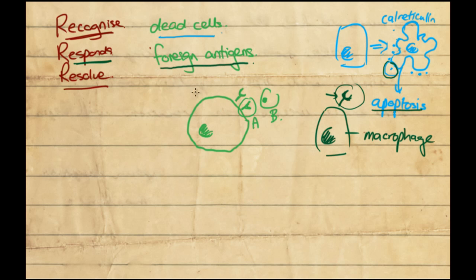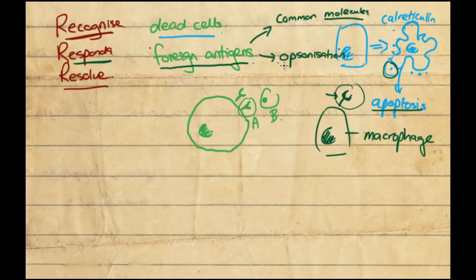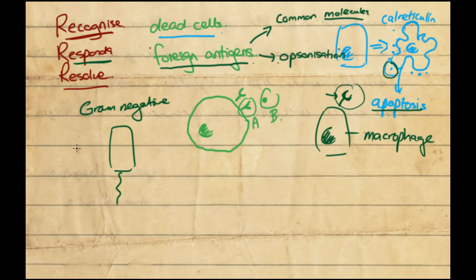Now let's talk about how foreign antigens are recognized. There are basically two ways: one is by common molecules, and the other is via opsonization. Many pathogens which are harmful to us have common molecules. For example, in gram-negative bacteria — that's just a classification of bacteria — they have a component in their cell wall known as lipopolysaccharide or LPS, and a lot of gram-negative bacteria have that in common.